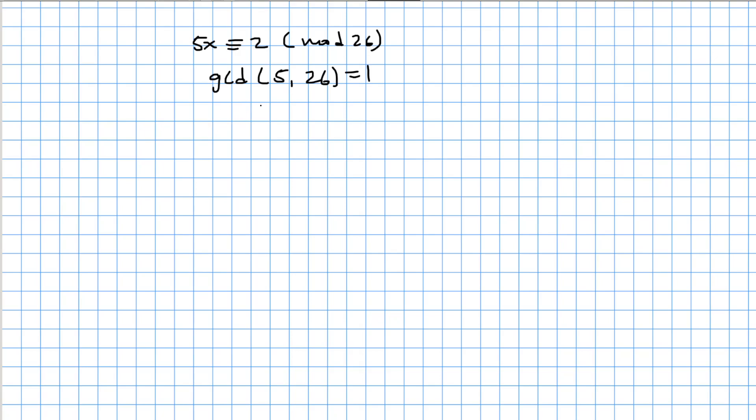So we're going to use the Euclidean algorithm, starting out with the biggest number outside. And then we say, how many times does 5 go into 26? That's going to be 5, remainder 1.